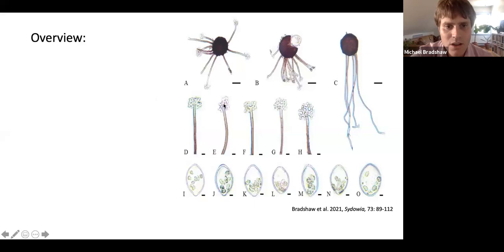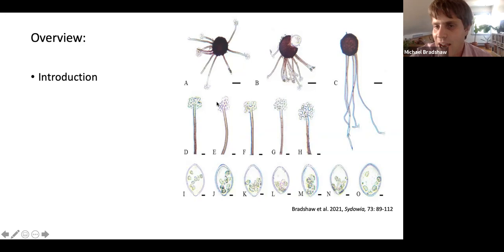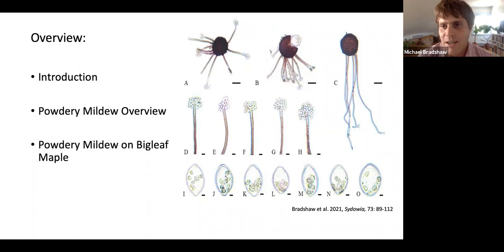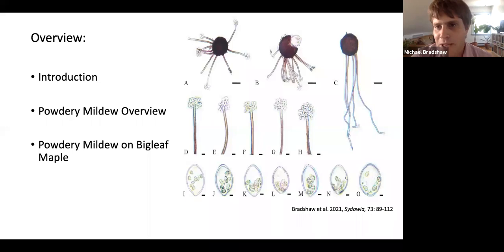In my talk today, I'm going to start off with an introduction about myself and how I got to be here today. Then I'll go over a brief overview of the powdery mildews and why I study them in particular. Then I'll get into the heart of my talk, which is a particularly virulent powdery mildew species that affects an ecologically significant plant host: big leaf maple, or Acer macrophyllum. Last, I'll talk about what my plans are at the Farlow for the next couple of years.